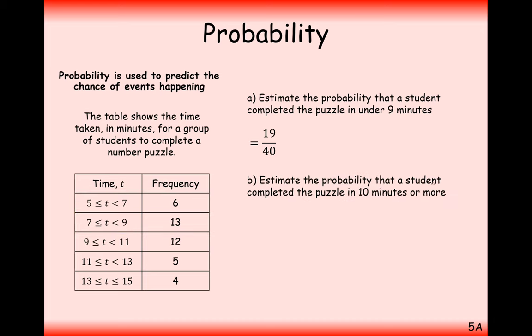Part B is estimate the probability that a student completes the puzzle in 10 minutes or more. Well, here we only have a group between 9 and 11. So what we'll have to do is cut those 12 people in half. So we'll just take half of that group. So we'll take 6 people there.